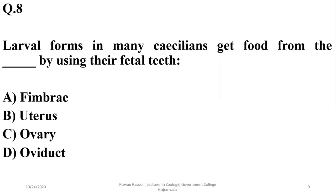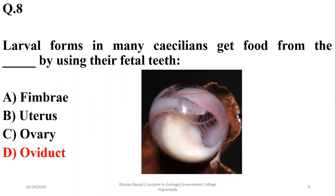Number eight: larval forms in many caecilians get food from the oviduct by using their fetal teeth. The larval forms develop in the oviduct and get their food from there using their fetal teeth, so the right option is D.